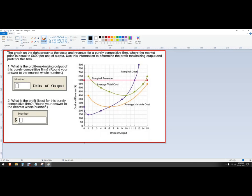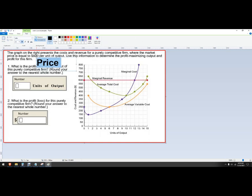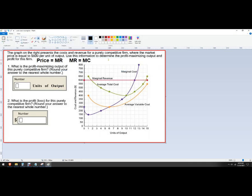And that's what their marginal revenue is, because each additional unit they sell is going to sell for $600. So the condition that we're always going to look for under perfect competition: since price is equal to marginal revenue, and I always want to produce to where marginal revenue equals marginal cost, then the case is just that price equals marginal cost.